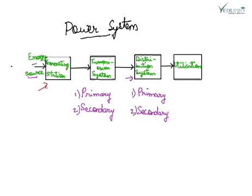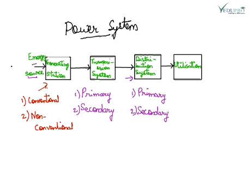Now, talking about the generating station — the first block — the generating system employs a number of alternators in parallel to generate electrical power. The generating systems are broadly classified into two parts: the first part is the conventional system and the second is the non-conventional system.